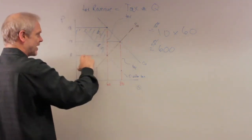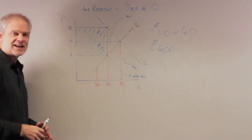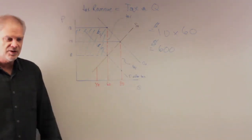So this rectangle right here, this times this, dollars times quantity, that gives me the tax revenue, the 10 times the 60, or $600. And that's how you compute it.